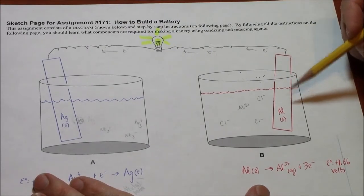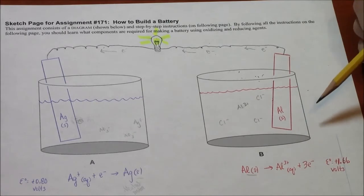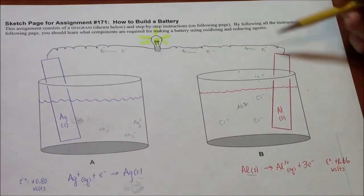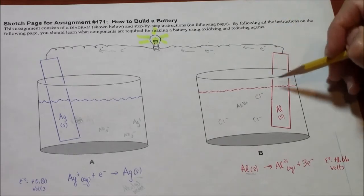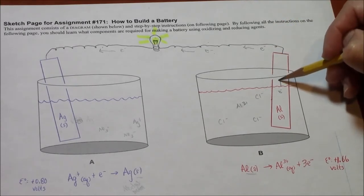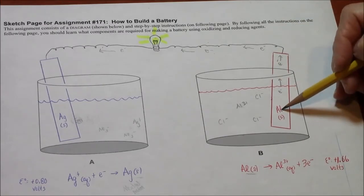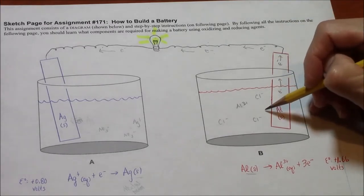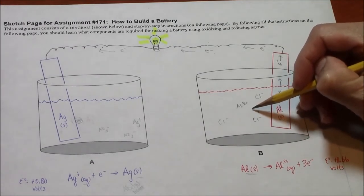On the right hand electrode, it's the opposite. We start with solid aluminum, but it turns into an ion. The electrons go up. Maybe we'll show some electrons going up. Leaving this aluminum now, it comes off the electrode and becomes another ion.